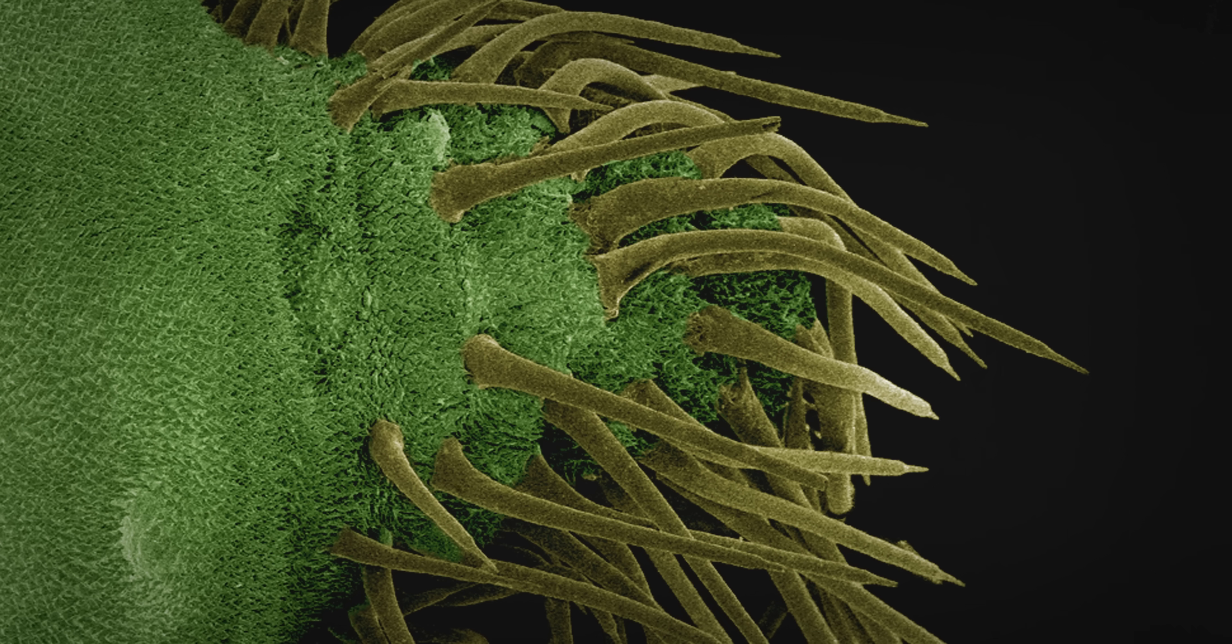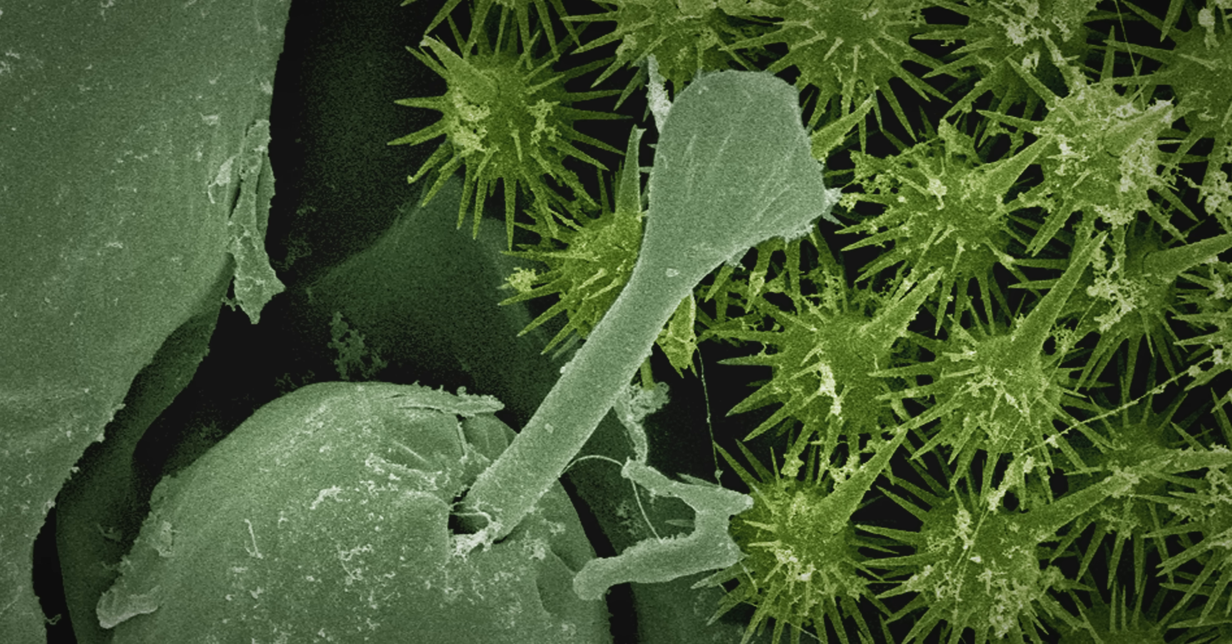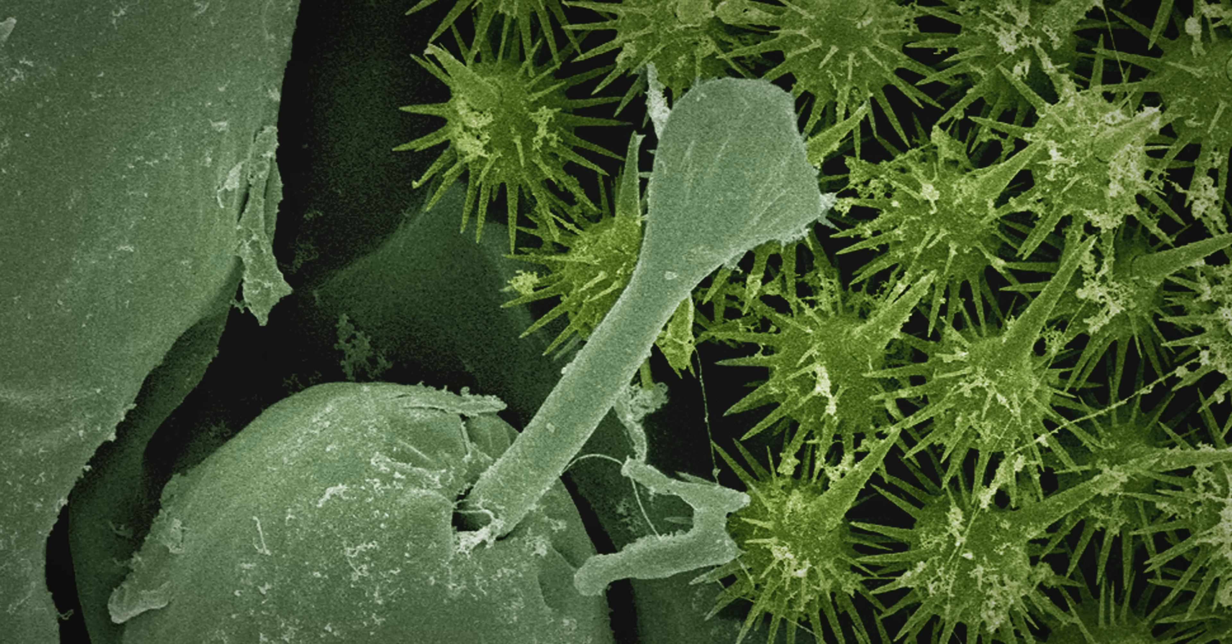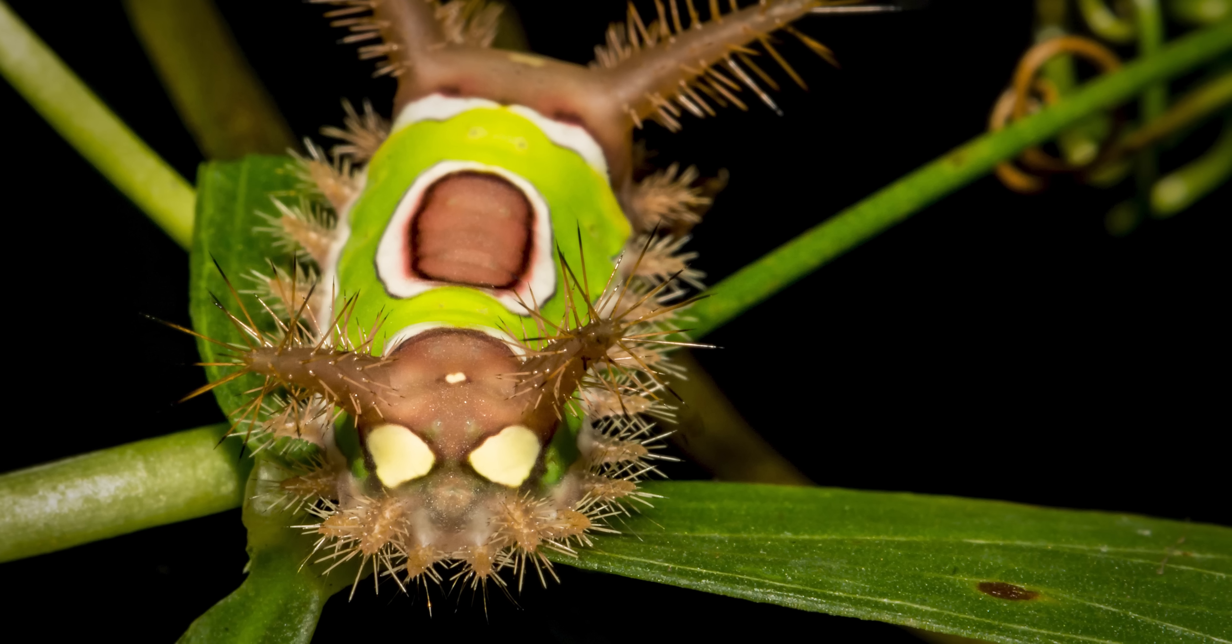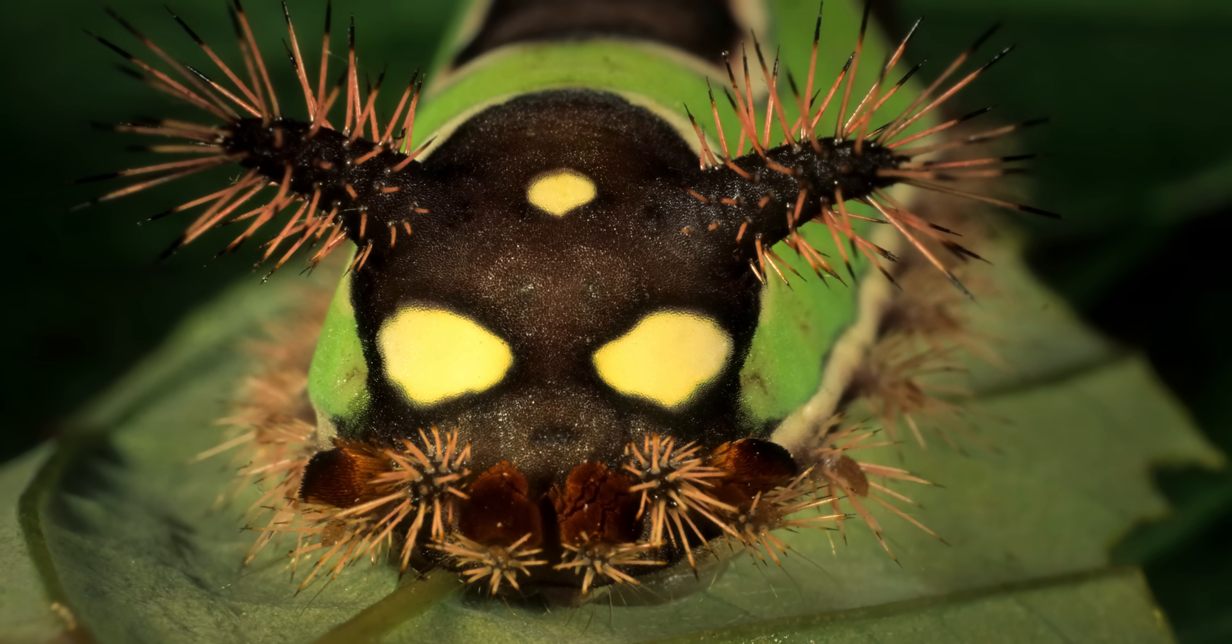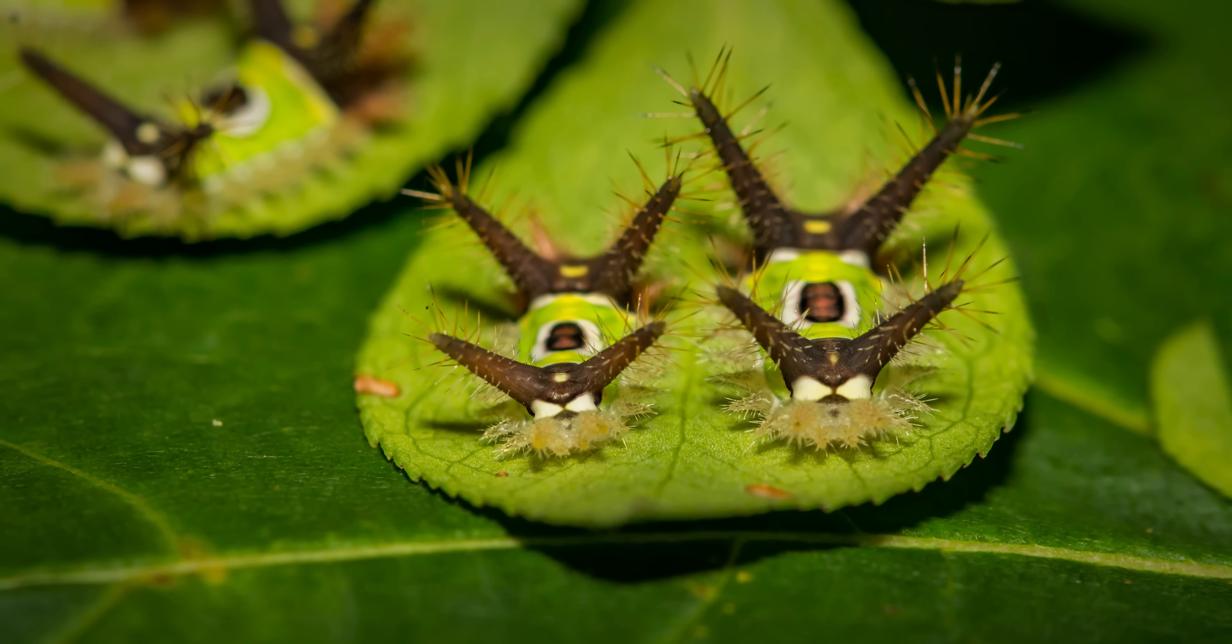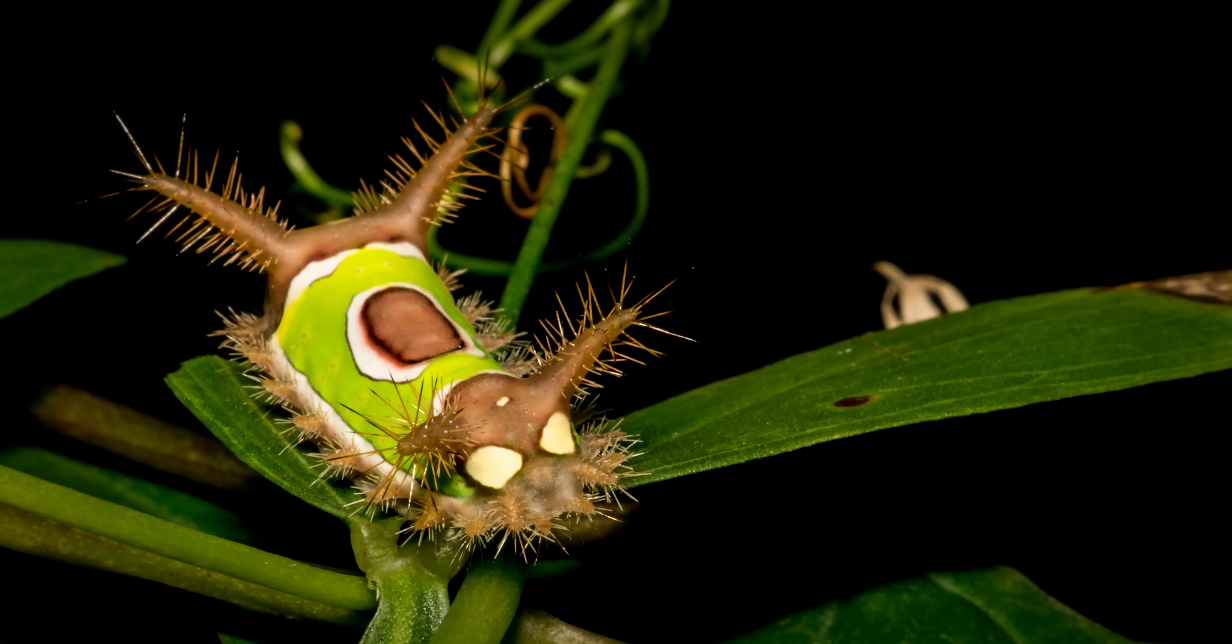Each horn is lined with venom-filled hairs, and touching them would be a regrettable experience, complete with instant pain, swelling, and nausea. As if that wasn't scary enough, check out this built-in bluff: a fake face to scare off danger. And get this, it's facing backwards. So no matter where you look, this little stinger is sending a warning. Stay back!